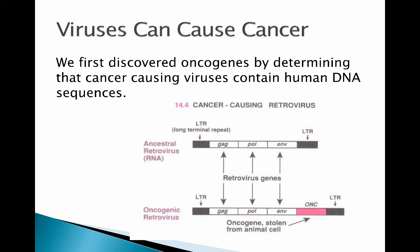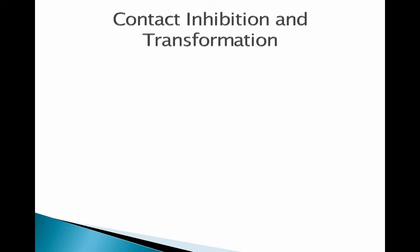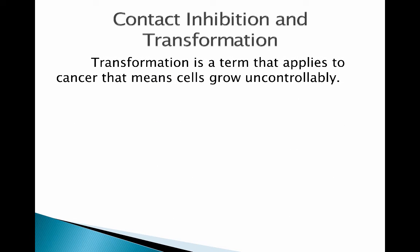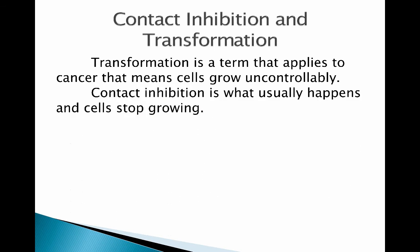When a retrovirus picks up the oncogene and inserts it into a host, the gene doesn't go back to its normal location, so it's misregulated — and that misregulation is one of the ways a proto-oncogene can become an oncogene. Contact inhibition is when cells sense their surroundings and stop growing when they start running into other cells. Transformation means a cell that normally exhibits contact inhibition starts to grow and ignore the fact that it's touching other cells, and once a cell is transformed it can become cancerous.